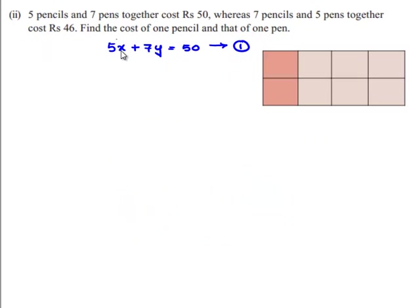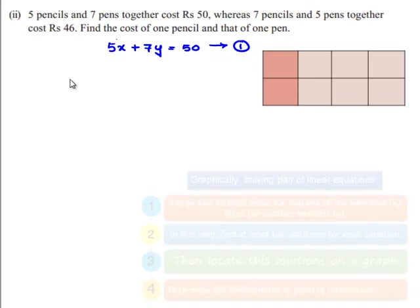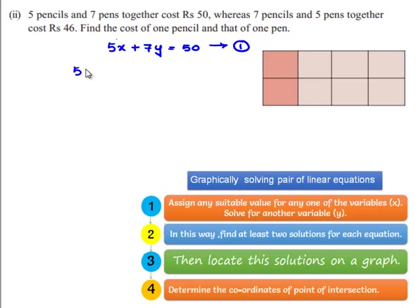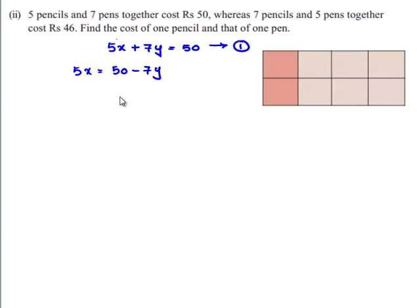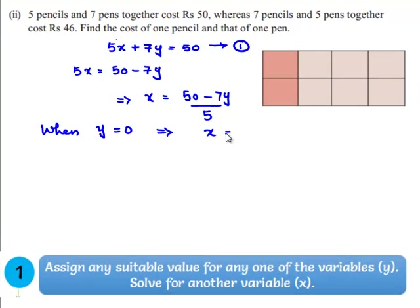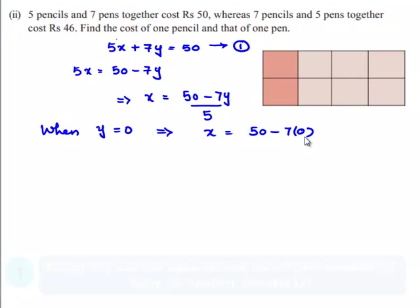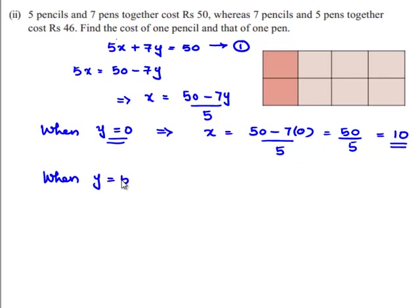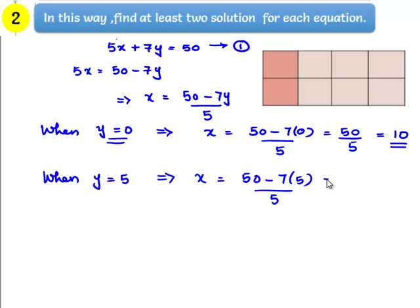The first equation is 5x plus 7y equals 50. This can be written as x equals (50 minus 7y) divided by 5. When y equals 0, x equals 50 divided by 5, which is 10. When y equals 5, x equals (50 minus 35) divided by 5, which is 3.